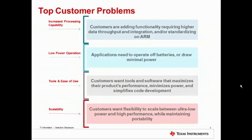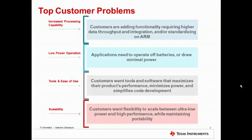What kinds of problems are customers looking to solve? Many times we see customers looking for increased processing capability. They want to add more capability into their device, or throughput, or analog performance, or perhaps they're standardizing on ARM. They also want low power operation, especially when they're battery powered or needing to draw just a minimal amount of line power.